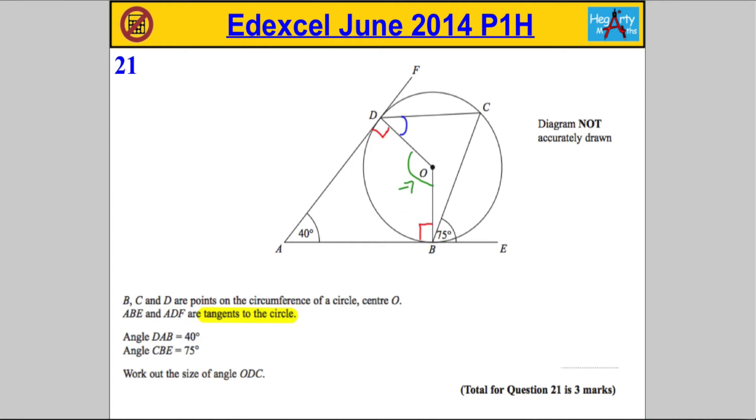Well, DABO forms a quadrilateral, it's a four-sided shape here, and all quadrilaterals have 360° in them. So if that's 90° and that's 90° and that's 40°, that's 220°. So that means the angle here must be 360° minus that 220°, so that's 40 plus 90 plus 90. Now that's going to give us 140°.